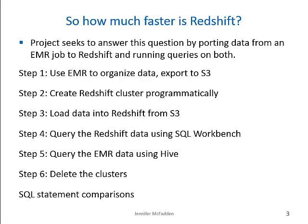This project and demonstration set out to understand how to use Redshift and to answer the question: how much faster is Redshift than EMR when querying data? I'll show you how to load the same sample data into both systems and run queries in both so you can compare the results. The workflow is as follows: Step 1, use Elastic MapReduce to organize data and export the result into S3 using a Hive script. Step 2, create a Redshift cluster programmatically using Java. Step 3, load the data from S3 into Redshift programmatically using Java. Step 4, query the Redshift data using SQL Workbench. Step 5, query the Elastic MapReduce data using Hive. Step 6, delete both clusters. In the end, we're going to review the SQL statement runtimes and compare the two methods.